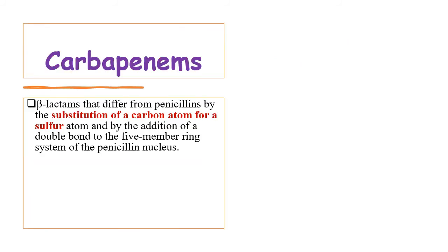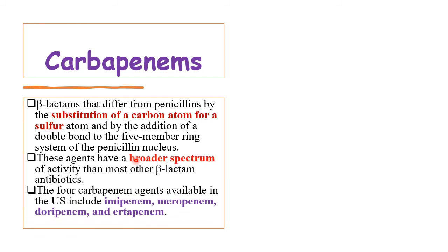Similarly, just as penam has the unsaturated form penem, cepham has the unsaturated cephem form, indicating the presence of a double bond in the six-membered heterocyclic ring. Moving to carbapenem — carbapenem is basically similar to the penam ring, with the key difference being the substitution of a carbon atom for sulfur, along with the addition of a double bond to the five-membered ring. Carbapenems have a broader spectrum of activity; examples include imipenem, meropenem, and doripenem.